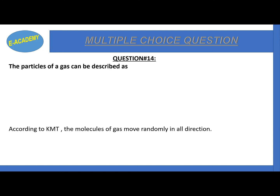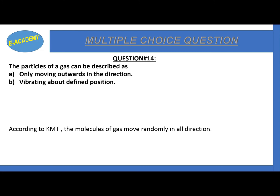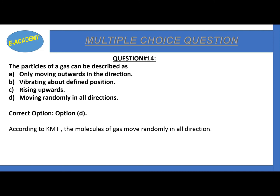Question number 14: the particles of a gas can be described as only moving outward in one direction, vibrating about a defined position, rising upward, or moving randomly in all directions? The correct option is D - moving randomly in all directions. Gas particles don't have predefined motion. In solid it is vibratory motion, in liquid it is vibratory and translational, and in gas it is random motion. According to KMT, the molecules of gas move randomly in all directions.